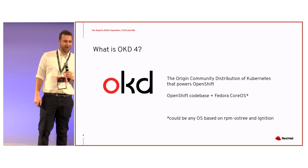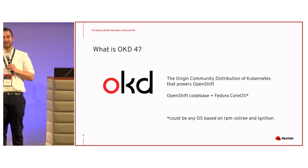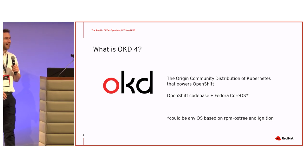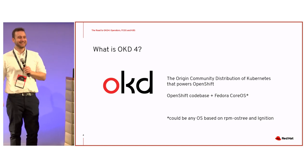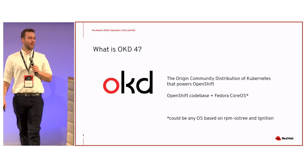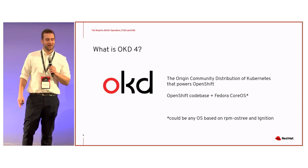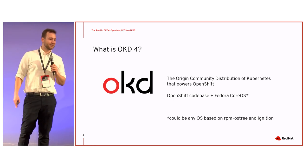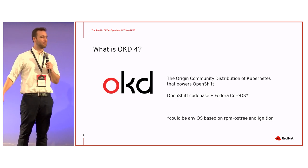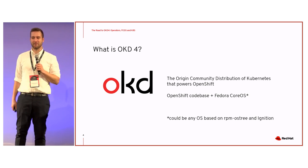What is OKD 4? OKD 4 is the origin community distribution of Kubernetes that powers OpenShift. It's not an acronym — that's very important, it just means that. It's the OpenShift codebase plus Fedora CoreOS. We build essentially off of the master branches, so OKD 4 right now is what OpenShift 4.4 will be at some stage essentially.